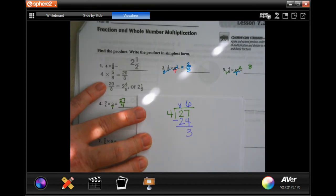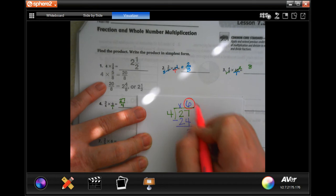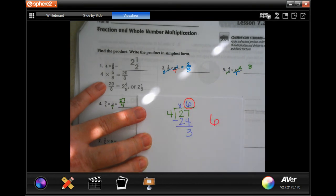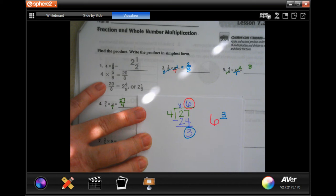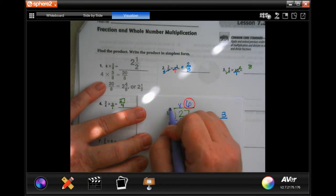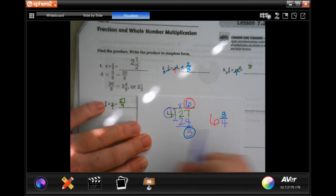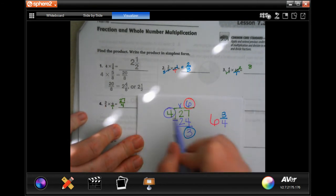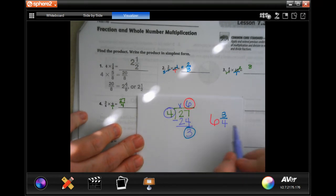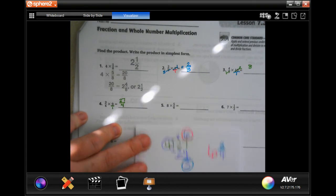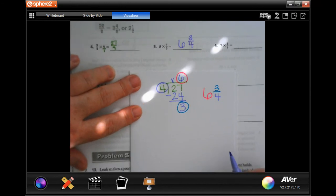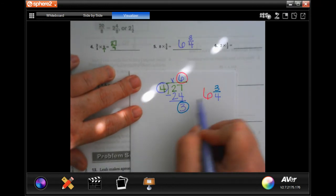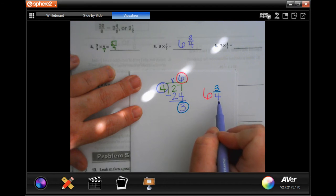So now, our whole number is going to be 6. Our numerator, the top number, is going to be 3, and our denominator is going to stay the same as it was. Just like it was here, it was 4. But our divisor is going to be our denominator. So your answer is 6 and 3 quarters. 6, 3, 4. That's where I got those numbers.